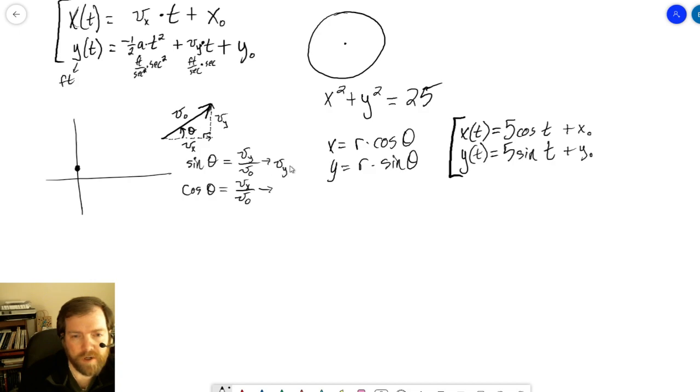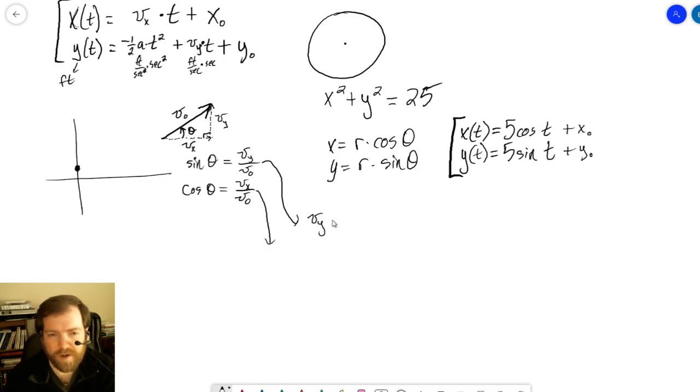So v sub y is equal to, that shouldn't do that, here, all right, v sub y is equal to multiply v0 to the other side, so v sub 0 times the sine of theta. And v sub x is equal to, similarly, v0 times the cosine of theta.